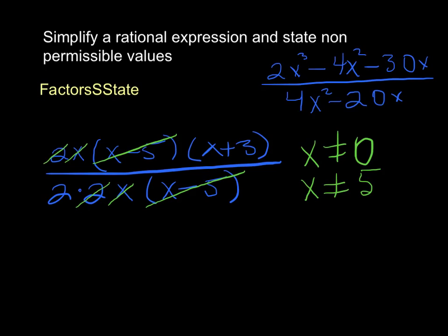So what we're left with is an x plus 3 in the numerator, and a 2 in the denominator. And then we just want to nicely state our non-permissible values, where x cannot equal 0 and 5.